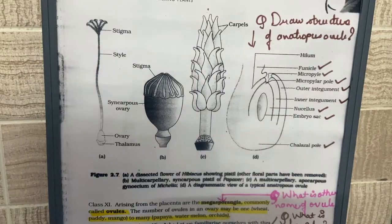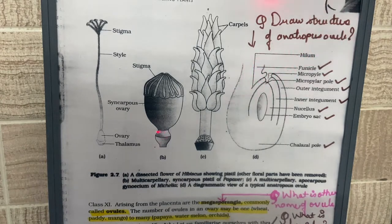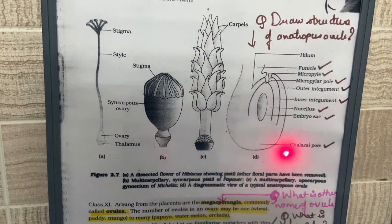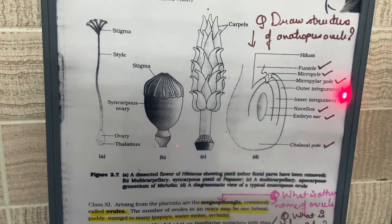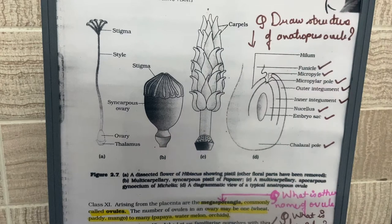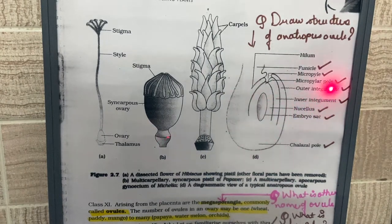On page number 25, the most important diagram comes — draw the diagram of the anatropous ovule. Let me explain the parts of the anatropous ovule.